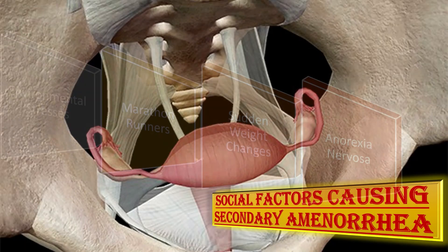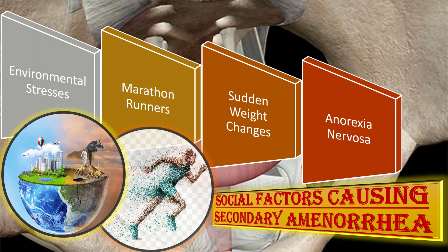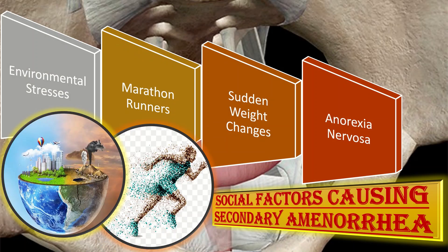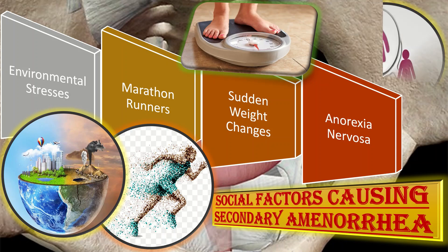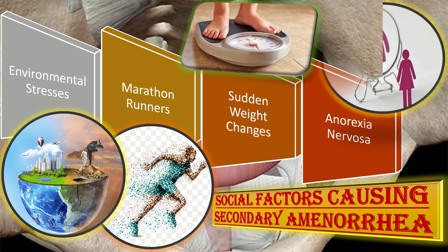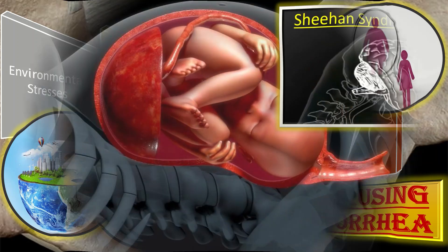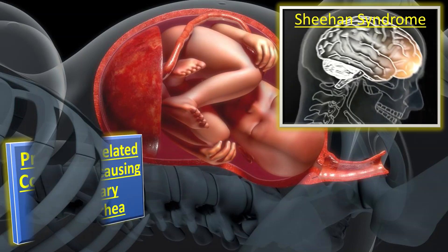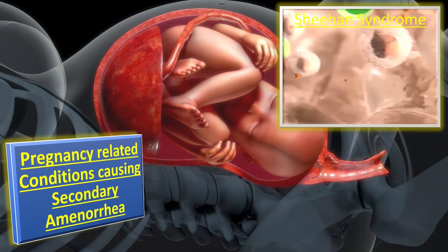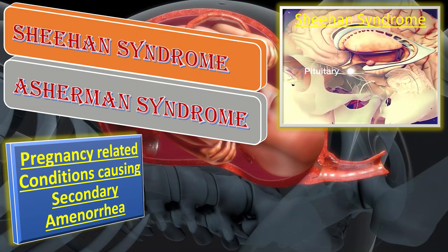What are the social factors responsible for secondary amenorrhea? Those include environmental stresses, marathon runners, sudden weight changes such as weight loss and weight gain, and anorexia nervosa.